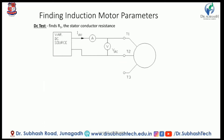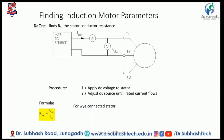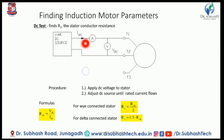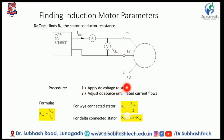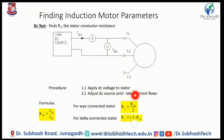The objective is finding the motor parameters — what are these parameters and how to select the appropriate current source. For the DC test: apply DC voltage to the stator and adjust the DC voltage until the rated current flows. The formula for DC resistance is: R_DC = V_DC / I_DC (ohms).